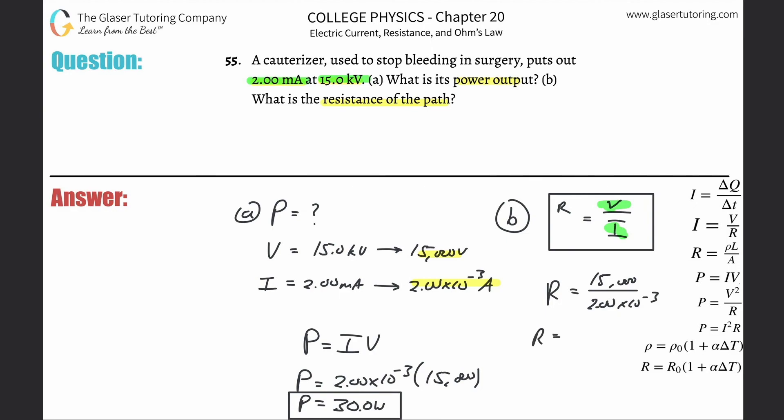And let's see what we get. So it's 15,000 divided now by 2 times 10 to the minus 3. Ooh, 7.5.